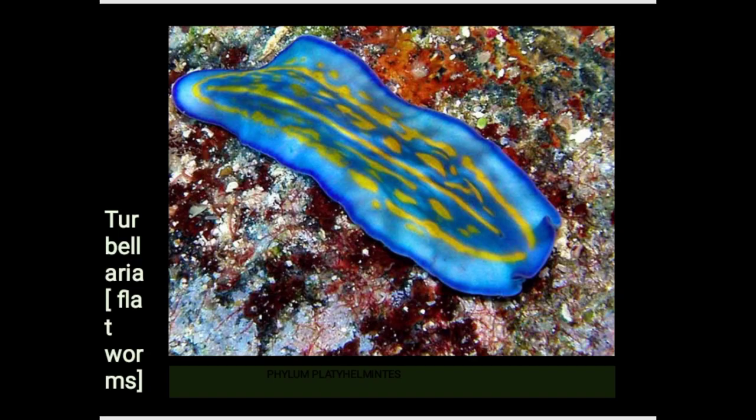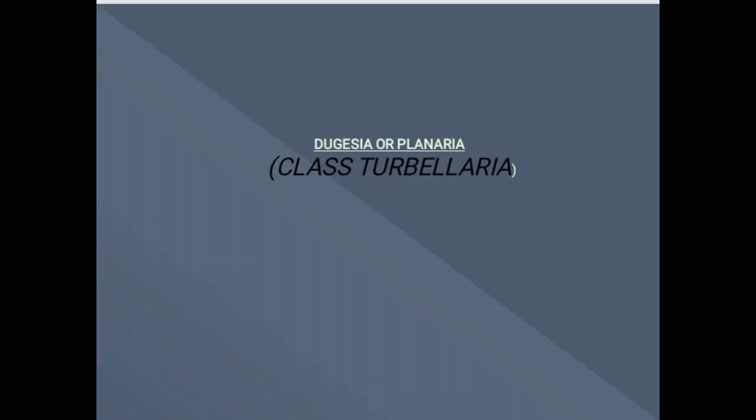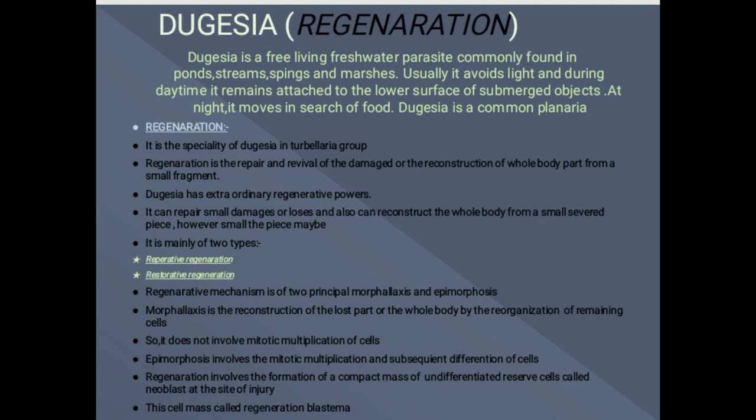Here is a picture of flatworm Turbellaria. Now we can move on to Dugesia, which is an example of class Turbellaria. Dugesia is a free-living freshwater flatworm that is found in ponds, streams, and other water bodies.